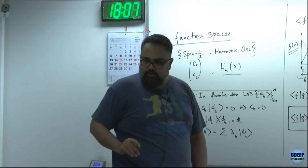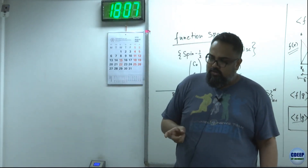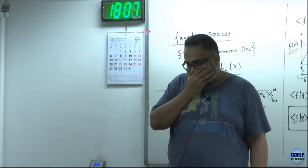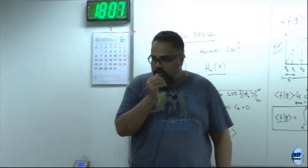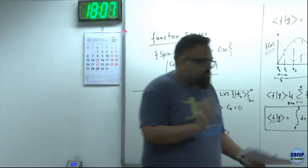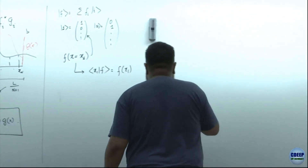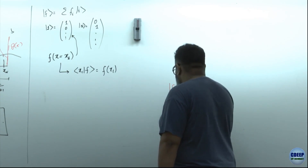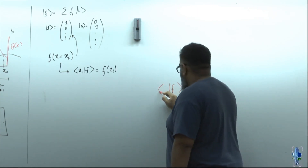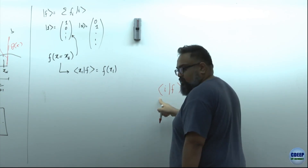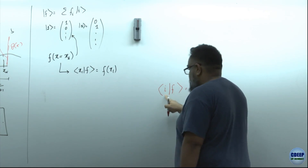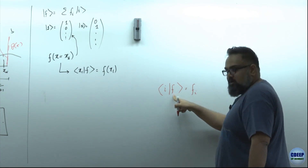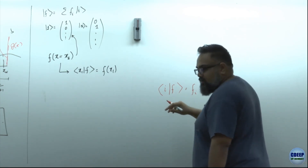So what does it give you? It gives you the projection of the abstract ket onto the basis. If I have a finite dimensional vector f and I want to ask what is its projection onto some basis vector |i> - the inner product <i|f> - I essentially just get f_i. These coefficients are the expansion coefficients to expand the function f in that basis.